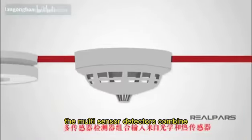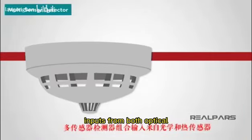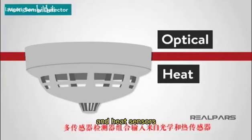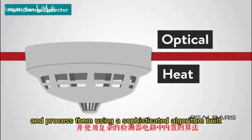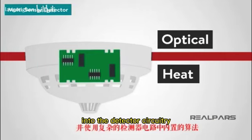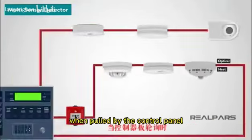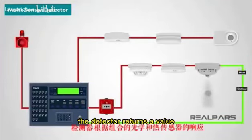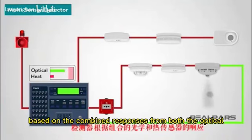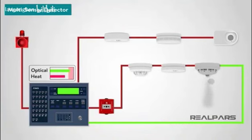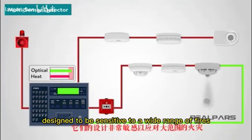The multi-sensor detectors combine inputs from both optical and heat sensors and process them using a sophisticated algorithm built into the detector circuitry. When pulled by the control panel, the detector returns a value based on the combined responses from both the optical and heat sensors. They are designed to be sensitive to a wide range of fires.